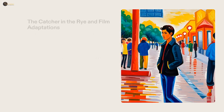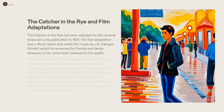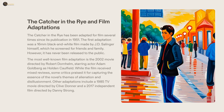J.D. Salinger's novel The Catcher in the Rye was published in 1951 and immediately became a classic of 20th century literature. Multiple film adaptations have been created in the decades since then, the latest being an independent production released in 2017. Critics have given these adaptations mixed reviews, but some have praised them for capturing the isolation and disillusionment that are major themes of the novel.